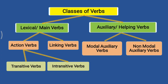Our next main topic is classes of verbs — how we can classify verbs. There are two main parts: lexical or main verbs, and auxiliary or helping verbs. Lexical verbs can be divided into action verbs and linking verbs, and action verbs can be classified as transitive verbs and intransitive verbs. On the other hand, auxiliary or helping verbs can be classified as modal auxiliary verbs and non-modal auxiliary verbs. Let's discuss one by one.